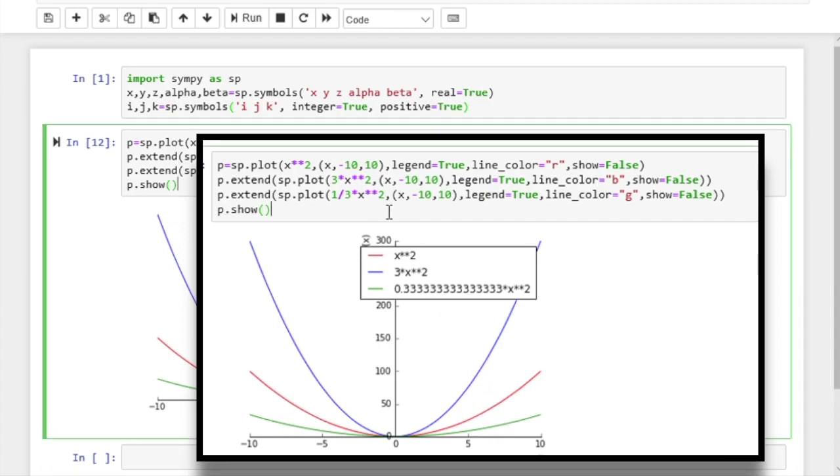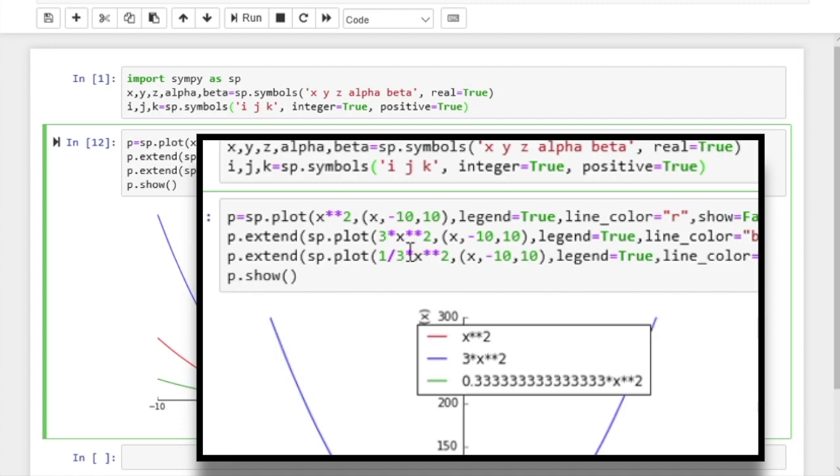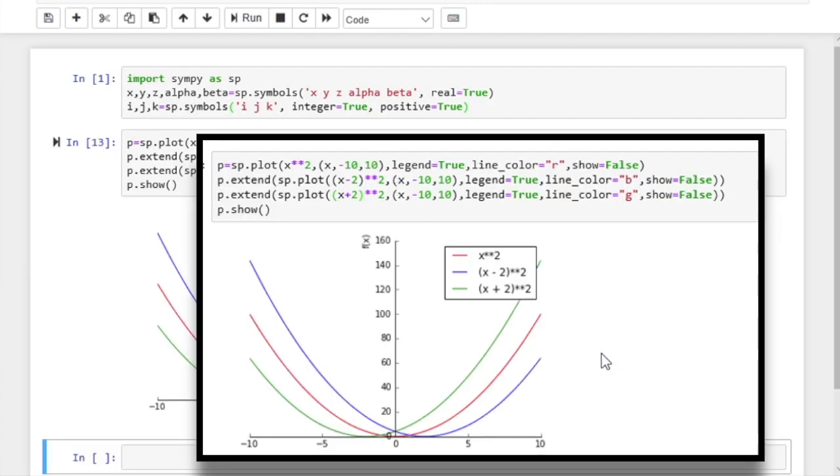We can also try horizontal shift. So if we subtract 2 from x, this should shift the curve to the right. And if we add 2 to x, it will shift the curve 2 points to the left. And if you run, so we can see the graph has been shifted along the x-axis.